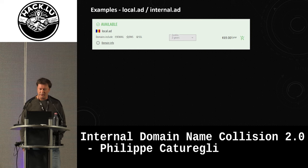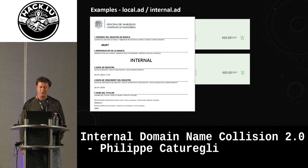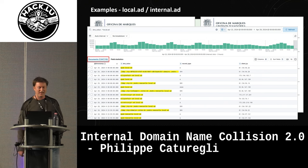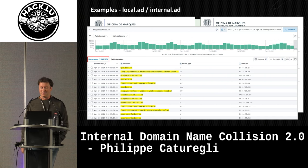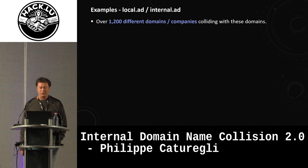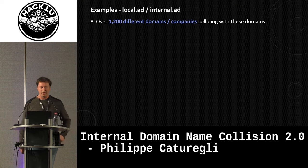We then went after local.ad and internal.ad, following the same process. We paid about 300 bucks, got the trademarks for those two TLDs, set up our DNS, and recorded about 7 million DNS requests to these domains in the first few days — all from internal networks. Looking through the logs over a few months, we found about 1,200 different companies colliding with these domains. Unlike MMRTCC which was easy to transfer to one unique company, here we have 1,200 companies fighting for the same domain, so we can't really sell it to anyone.